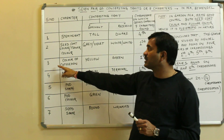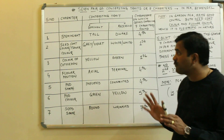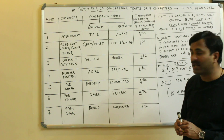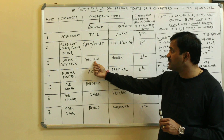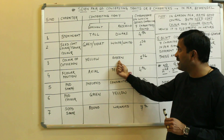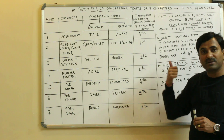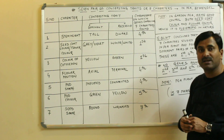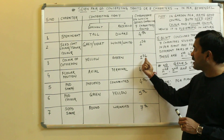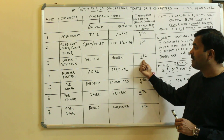Now coming to the third character: color of cotyledon. Yellow is the dominant trait and green is the recessive one. The genes controlling the color of cotyledon are found on chromosome number one.